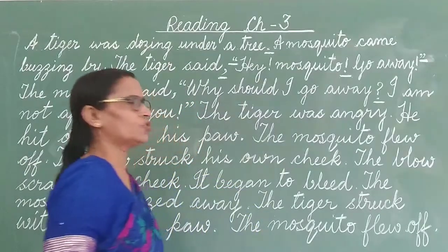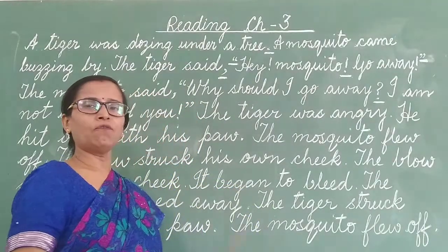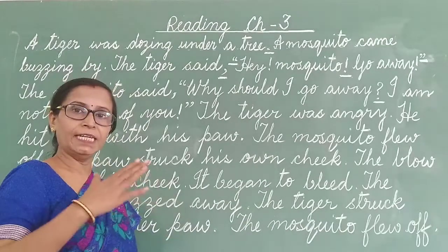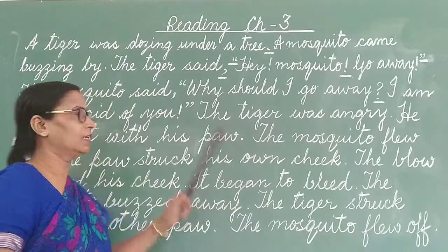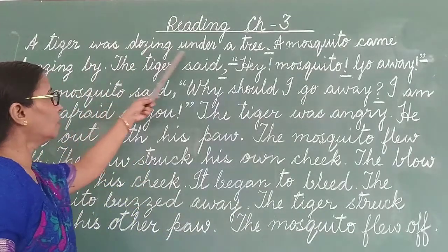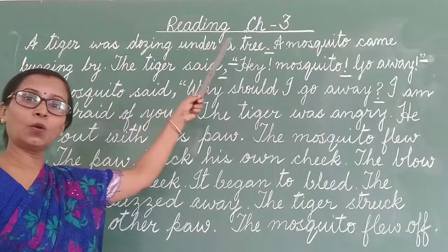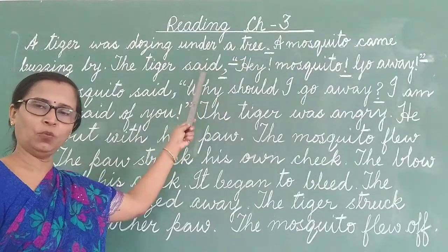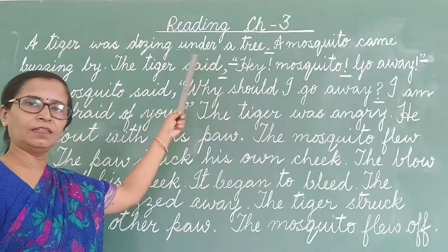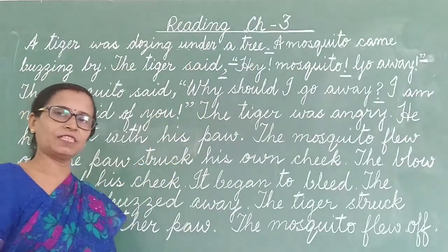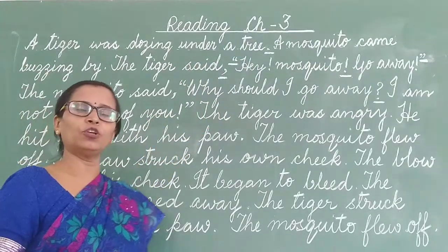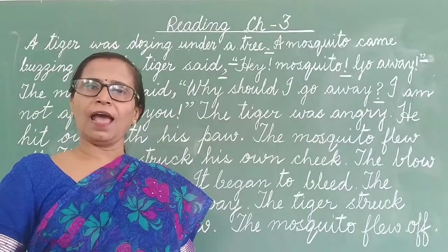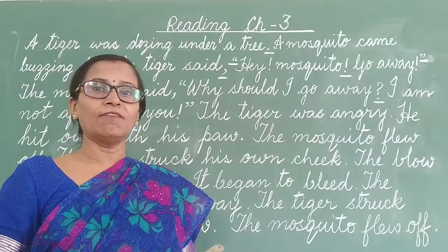So children, I will read the lesson now. First, I will read it slowly, putting stress on the difficult words. You will follow with me on the difficult words, and after that I will follow the rules of reading and read at a normal pace.